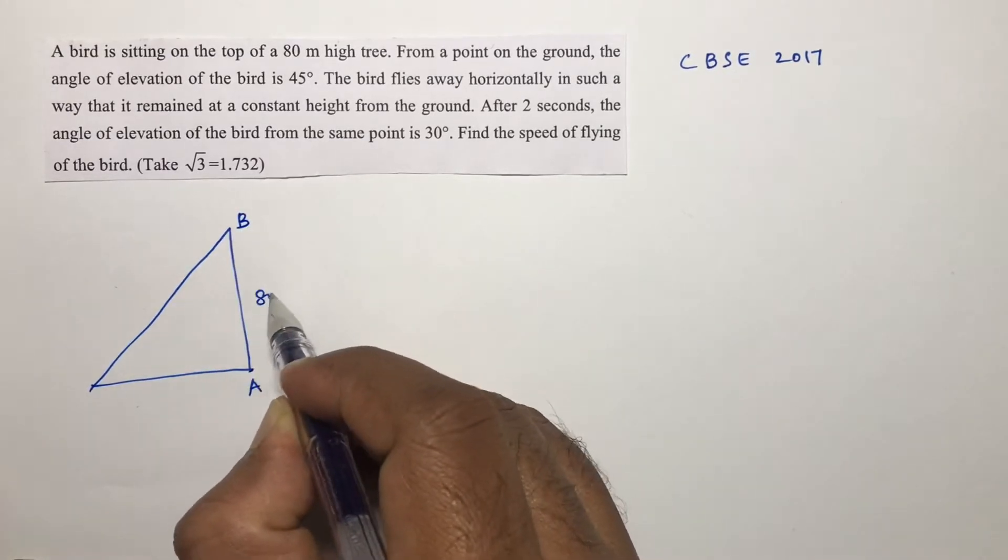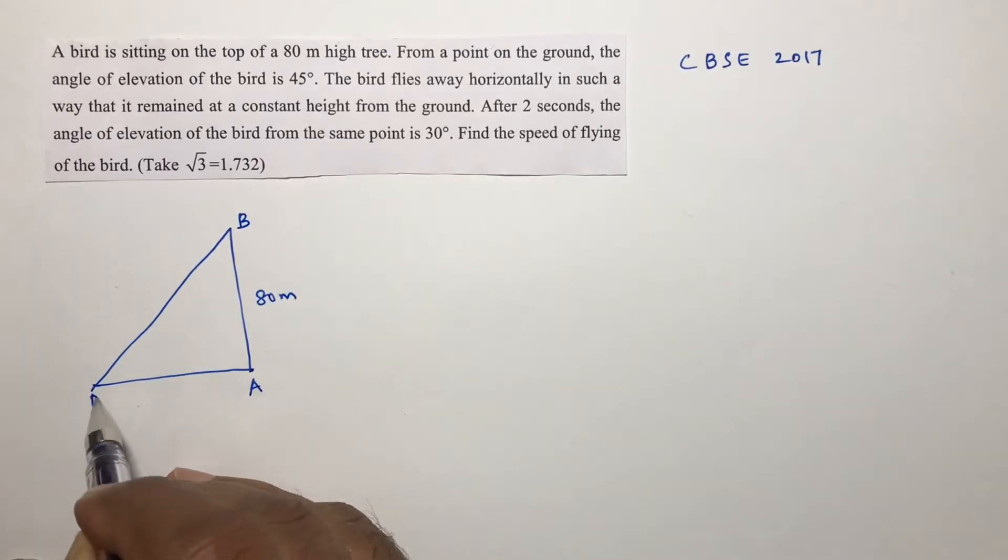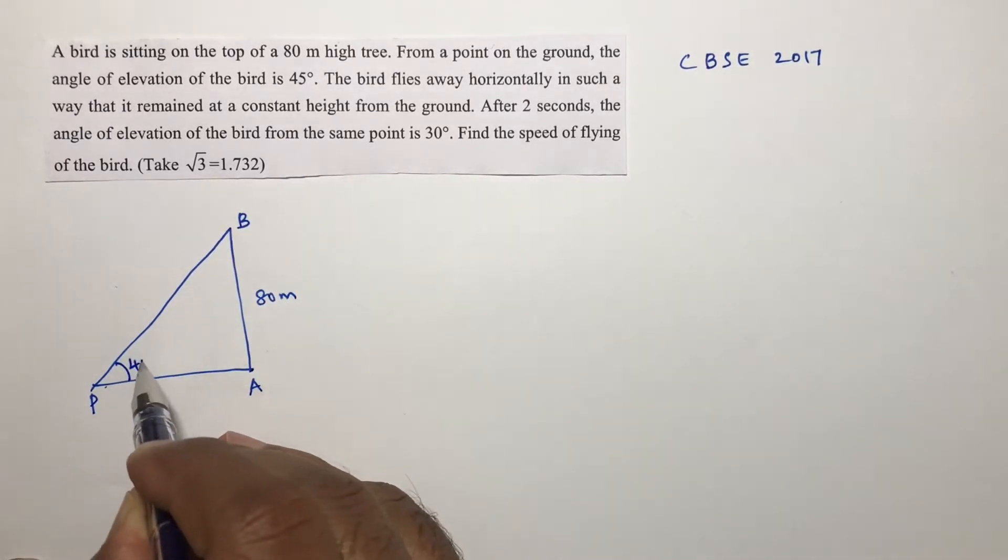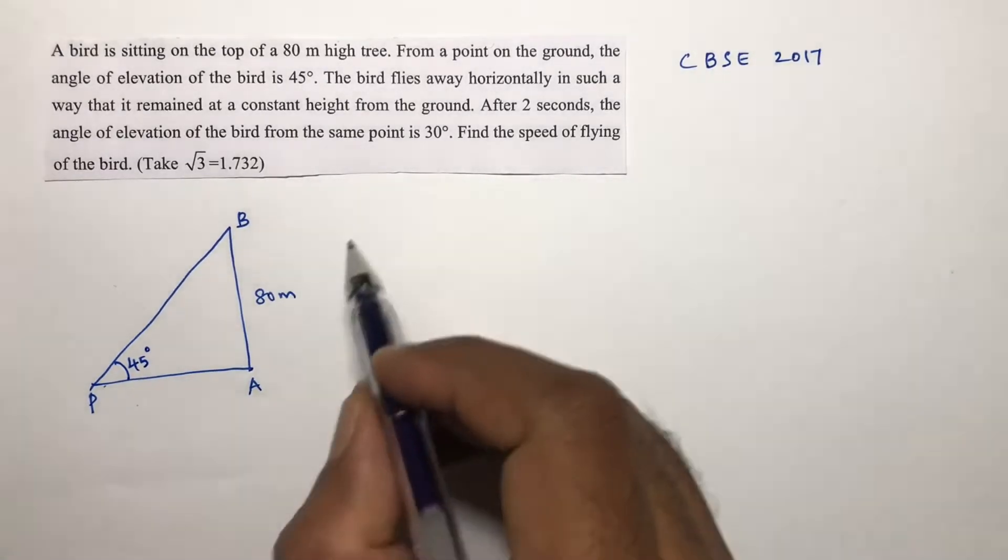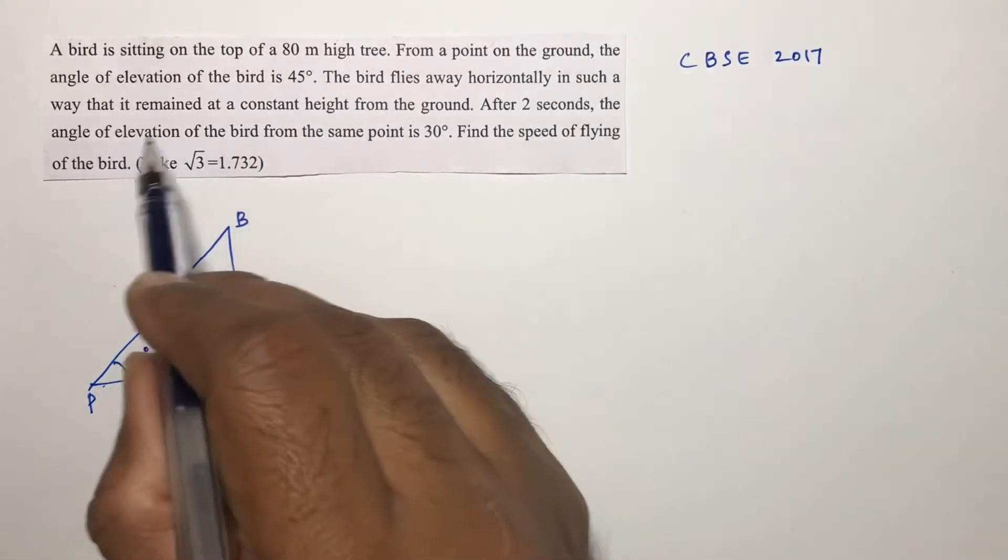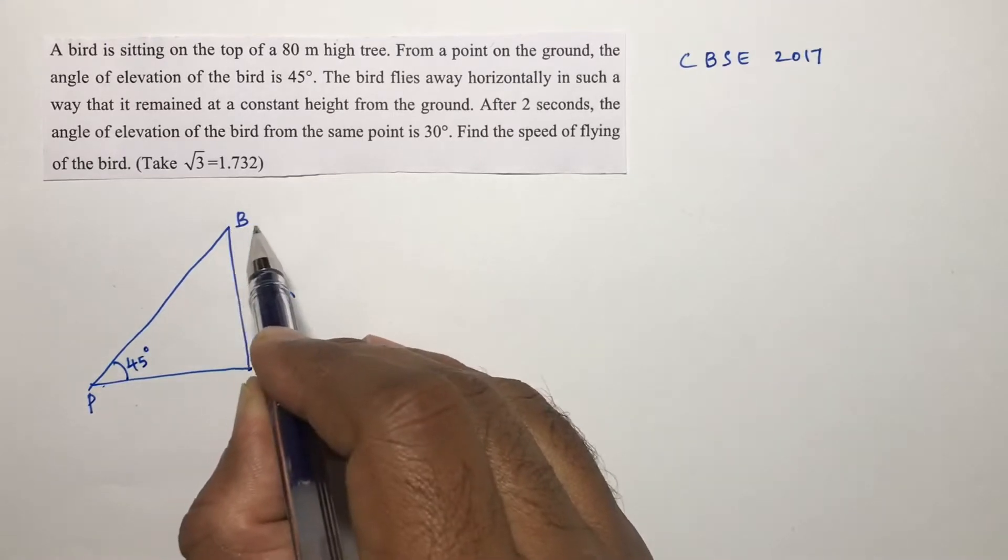From a point on the ground, the angle of elevation of the bird is 45 degrees. The bird flies away horizontally in such a way that it remained at a constant height.